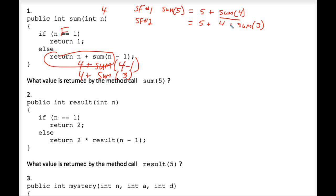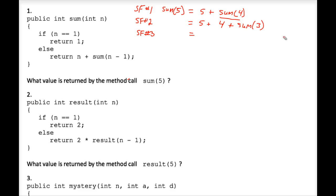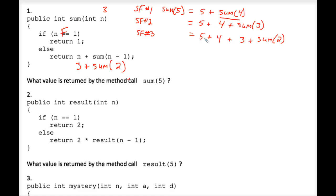Rewriting this to be neat. Now we drill down into stack frame number three, where parameter n is three. n is three, this if statement is false, so we have three plus the sum of three minus one, which is two. So sum of three is rewritten as three plus the sum of two. Do not simplify and change five plus four plus three to twelve — sometimes that gets you into trouble. This is a very neat, methodical way to trace these recursive methods.